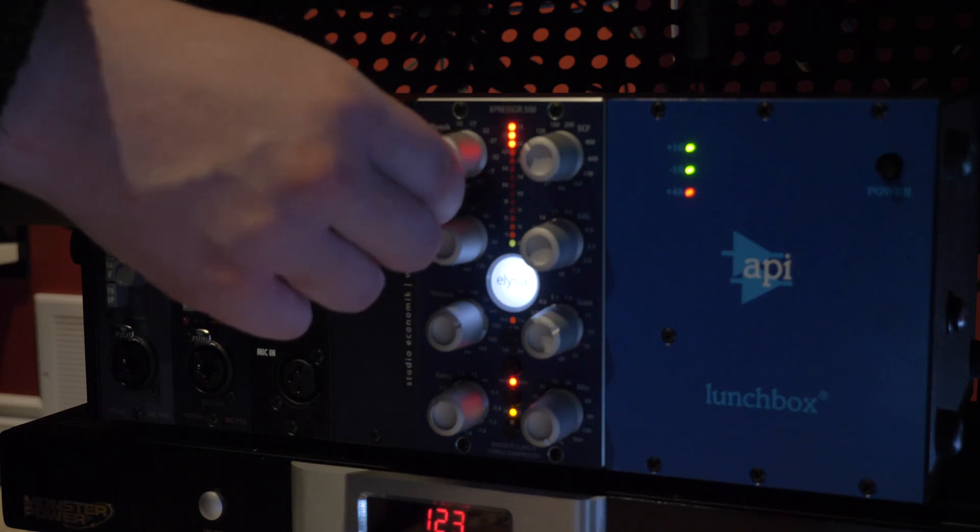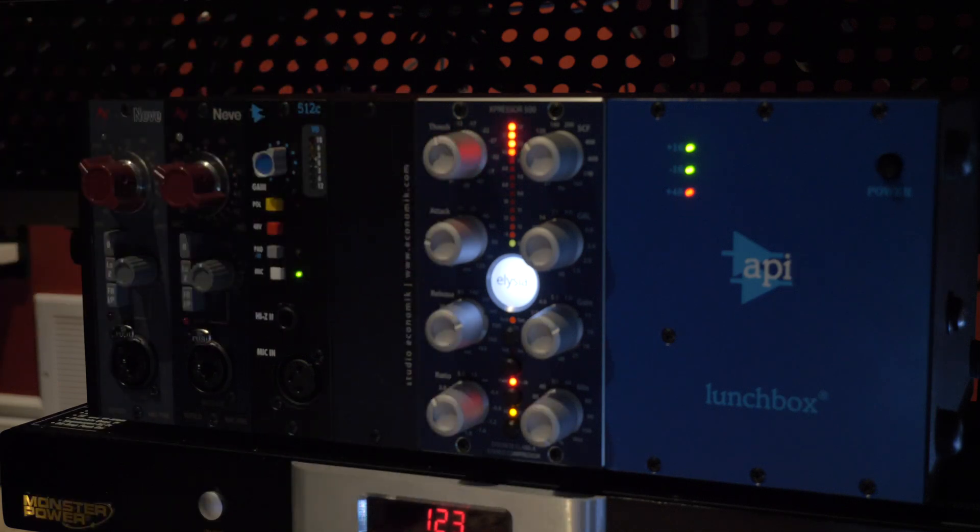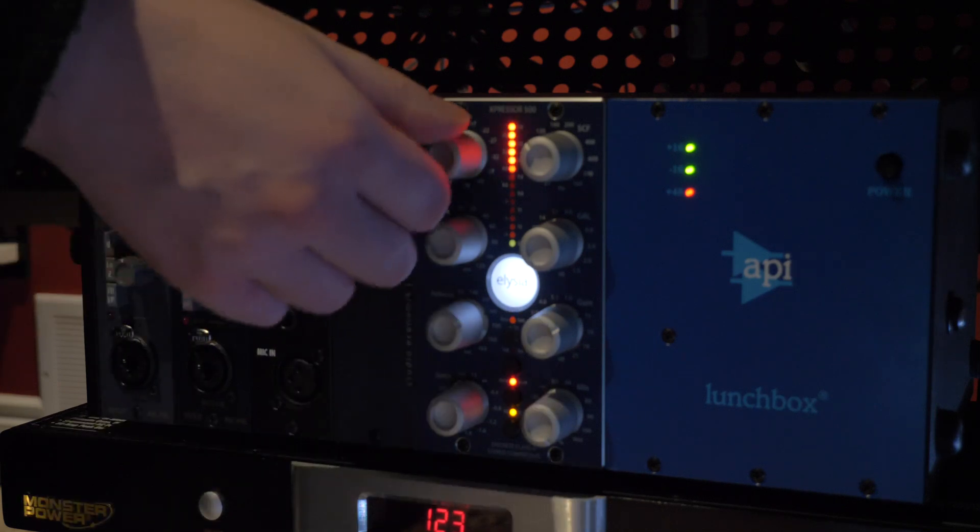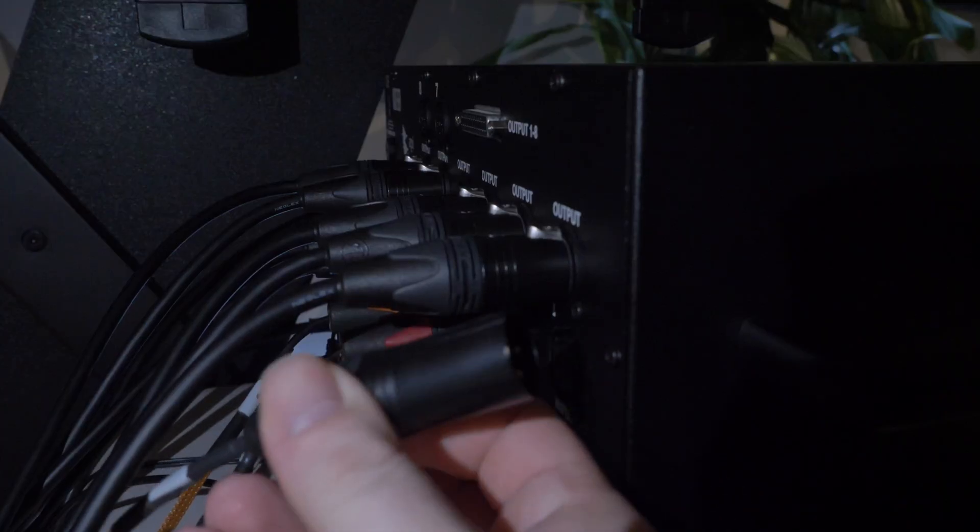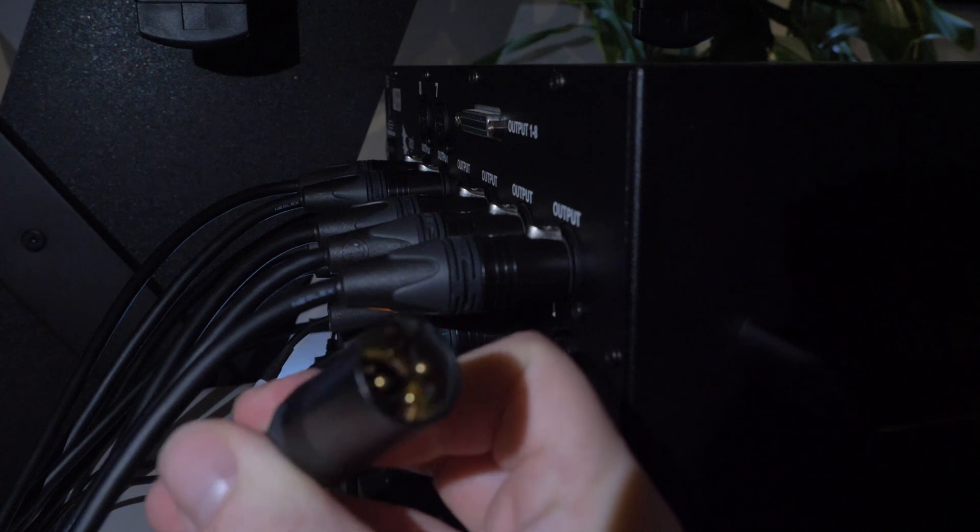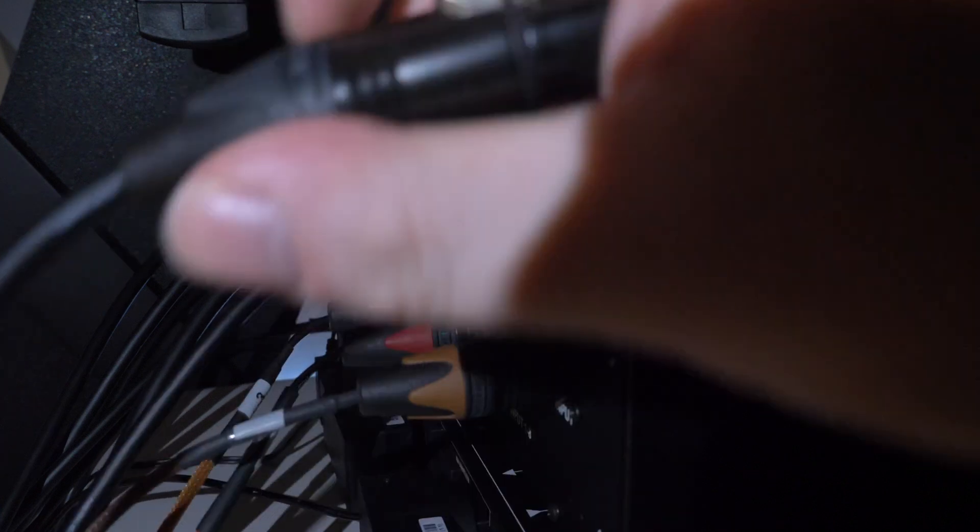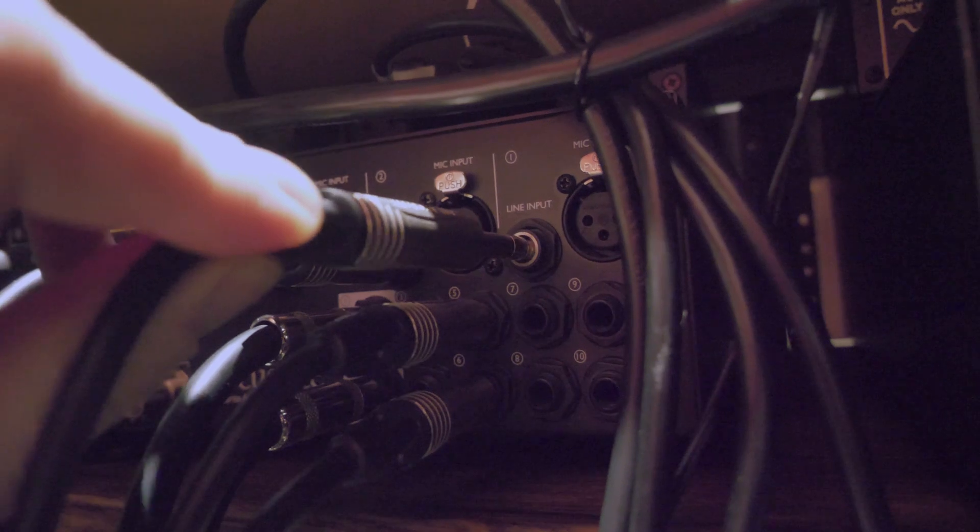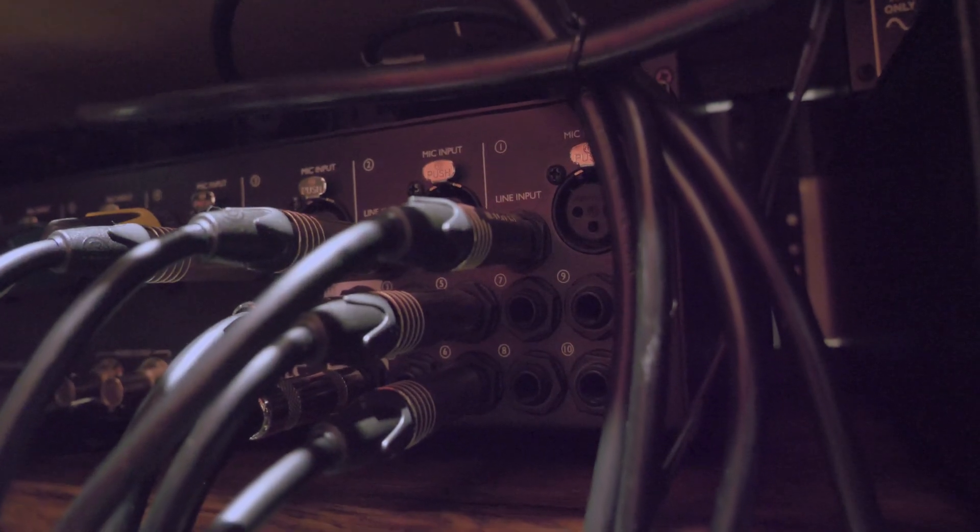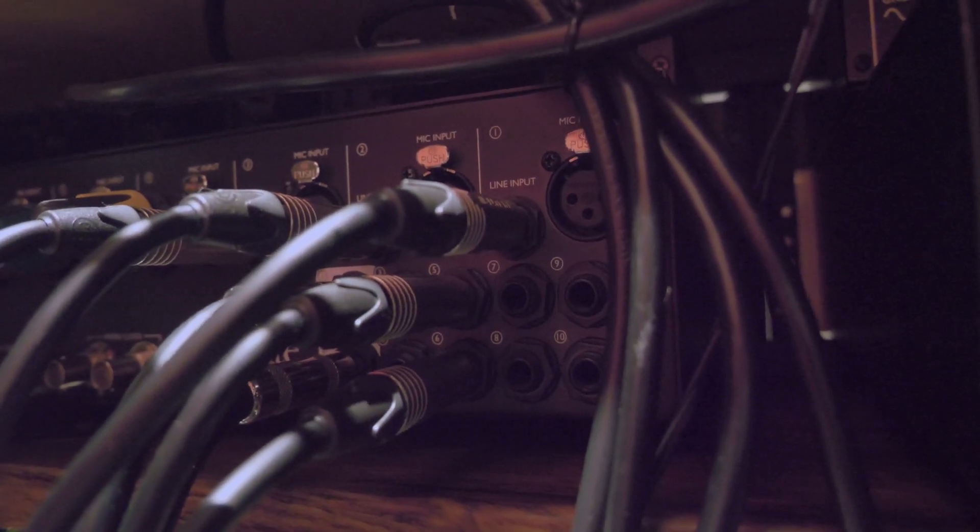There's also a stereo compressor in the lunchbox and to use that we're coming out of line output five six with two male balanced quarter inch cables going into the lunchbox with male XLRs. Then just like the others we're taking female XLR out of the lunchbox and going into the line input five six on my interface with male balanced quarter inch cables.